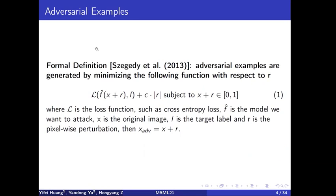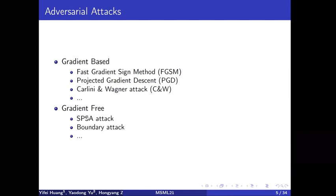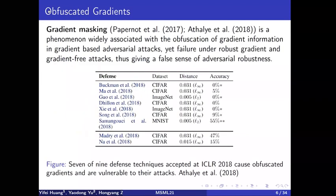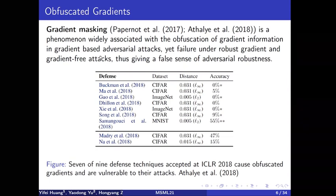Overall, attacks can be roughly divided into gradient-based and gradient-free attacks. Gradient-based attacks access the gradients of the original neural network, while gradient-free attacks do not. A key difference is that gradient-based attacks cannot identify whether the defenses have obfuscated gradients, which is a very important phenomenon. Gradient masking is a phenomenon associated with the obfuscation of gradient information in gradient-based attacks, yet gradient-free attacks give us a false sense of robustness, as seen in this table.